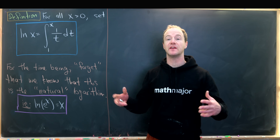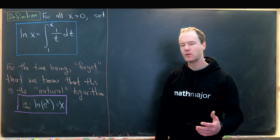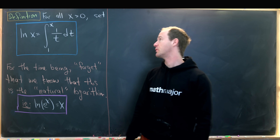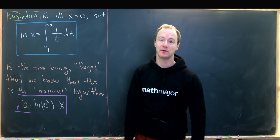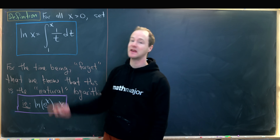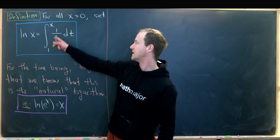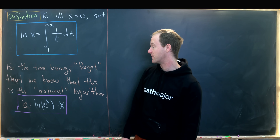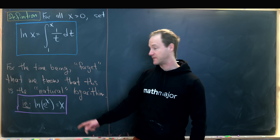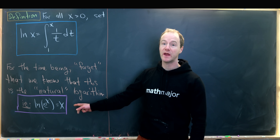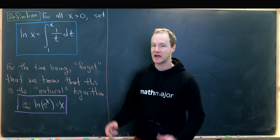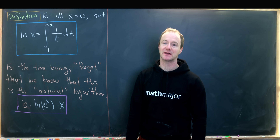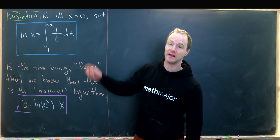In this video, we're going to look at an interesting definition for the so-called natural logarithm, and then we're going to show that this definition creates the same object that the standard definition creates. We want to define, for all positive real numbers x, the ln of x as the integral from 1 to x of 1 over t dt. We'll use 'ln' because for the time being, we're going to forget that this is the natural logarithm — specifically, that it's the inverse of the natural exponential function, i.e., that ln(e^x) = x. We'll finish this video off by showing that purple boxed equation holds, just by defining ln to be this integral.